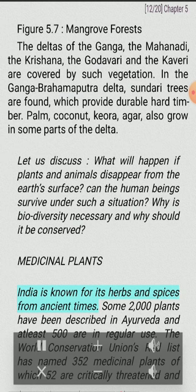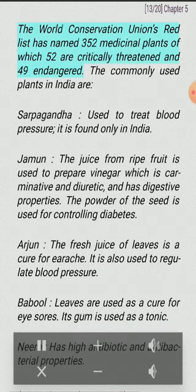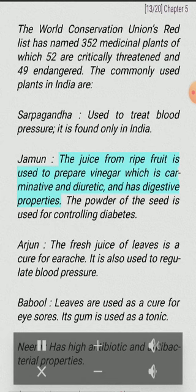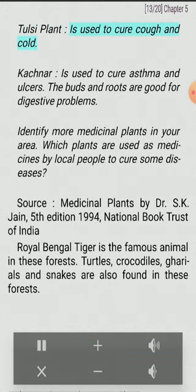India is known for its herbs and spices from ancient times. Some 2,000 plants have been described in Ayurveda and at least 500 are in regular use. The World Conservation Union's Red List has named 352 medicinal plants, of which 52 are critically threatened and 49 endangered. Commonly used medicinal plants in India include: Sarpaganda, used to treat blood pressure (found only in India); Jamun, whose seed powder is used for controlling diabetes; Arjun, whose fresh juice of leaves is a cure for earache and regulates blood pressure; Babul, whose leaves cure eye sores and gum is used as tonic; Neem, which has high antibiotic and antibacterial properties; Tulsi, used to cure cough and cold; and Kachnar, used to cure asthma and ulcers.